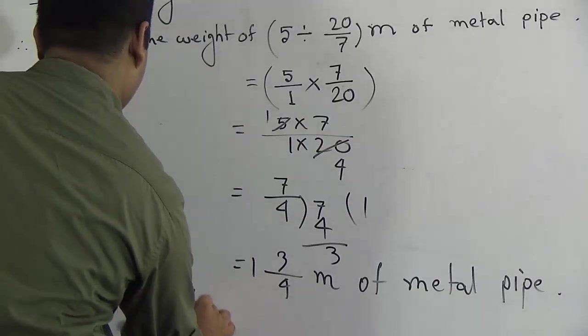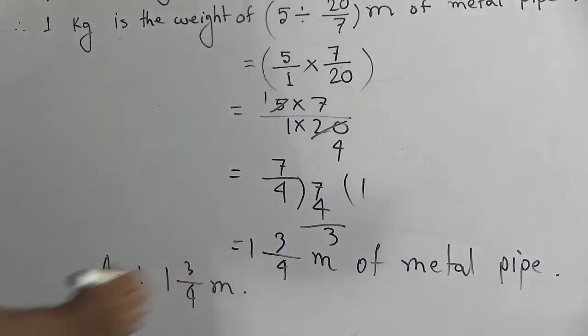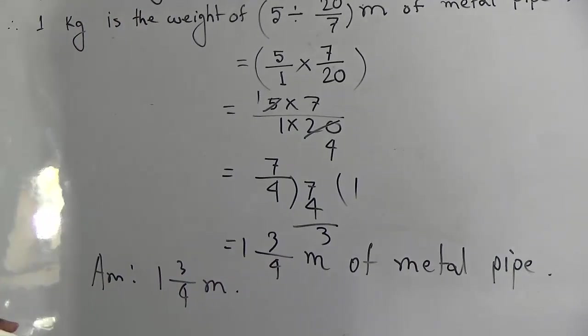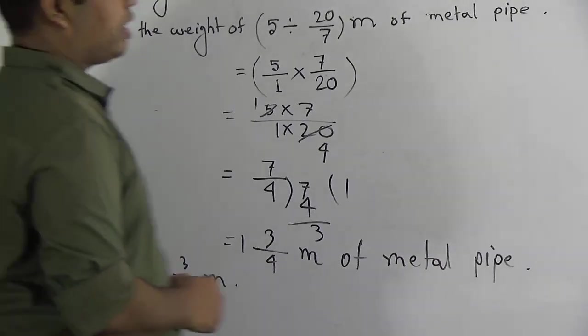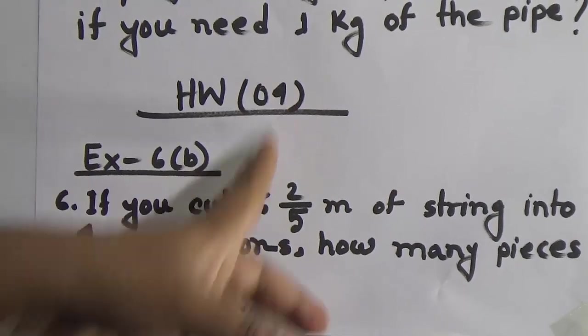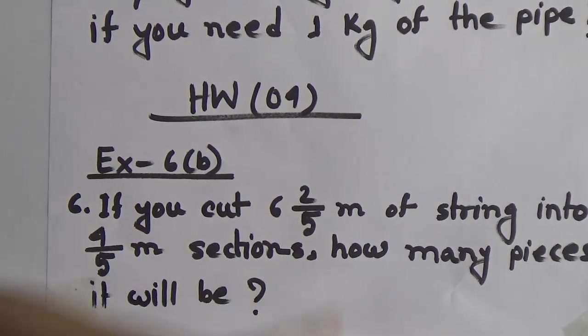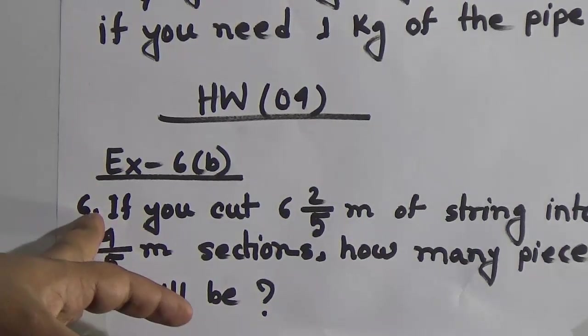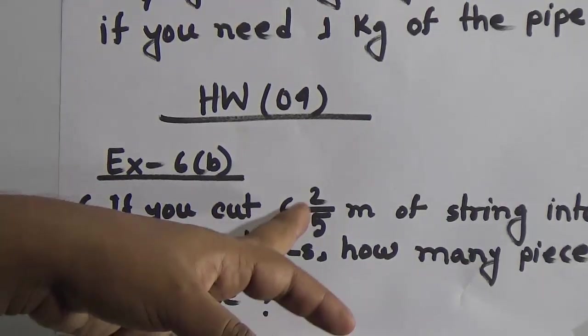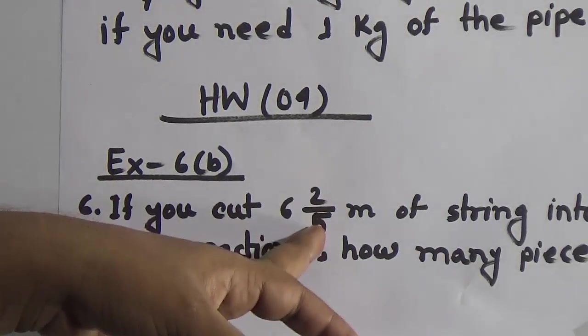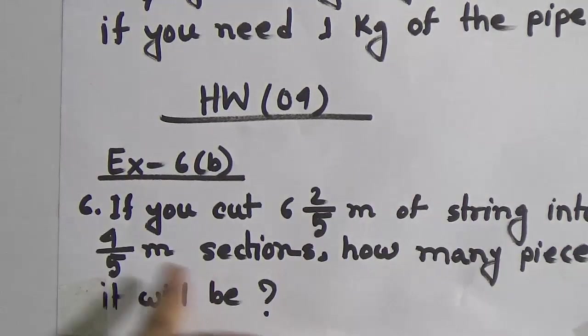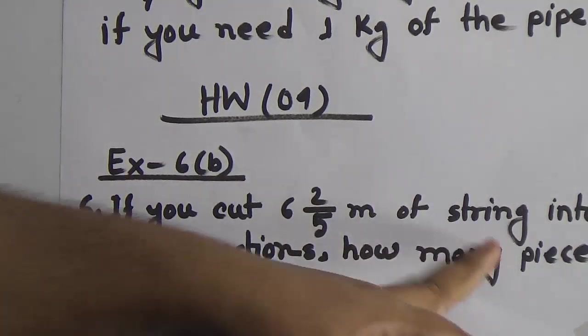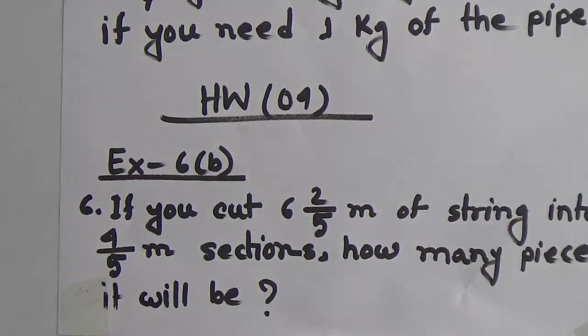The answer is 1 and 3/4 meters. I hope you have understood. Now, my dear student, please notice the board — this is your SW number 4. Only one word problem, question number 6, will be your SW. Read the question: if you cut 6 and 2/5 meters of string into sections of 4/5 meters each, how many pieces will there be?